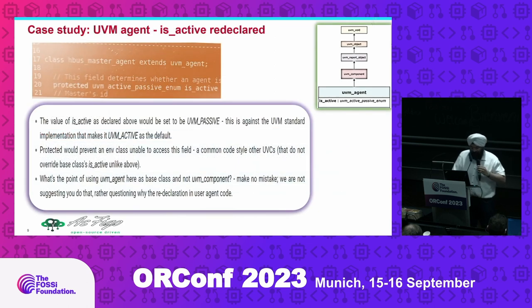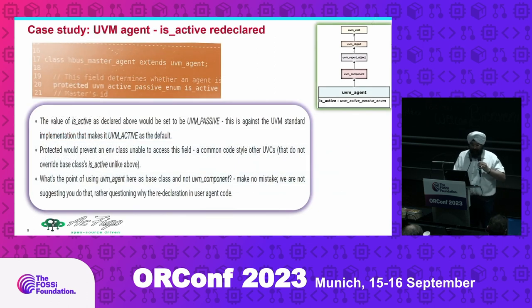Here you see the case study where it is actively declared. If it's not allowed from a UVM point of view either, but simulators will try to allow it, our pipeline can easily catch it in two seconds.